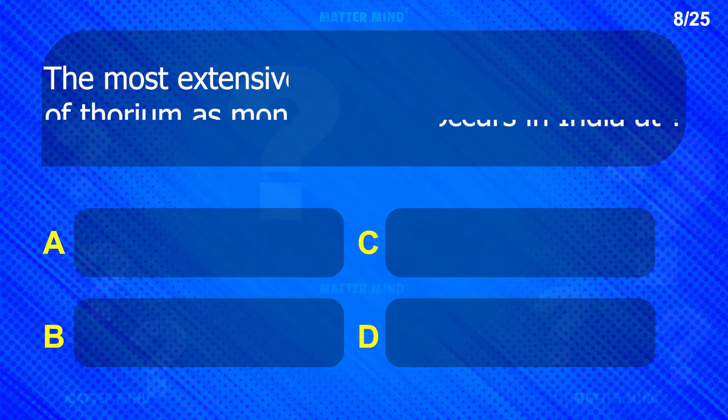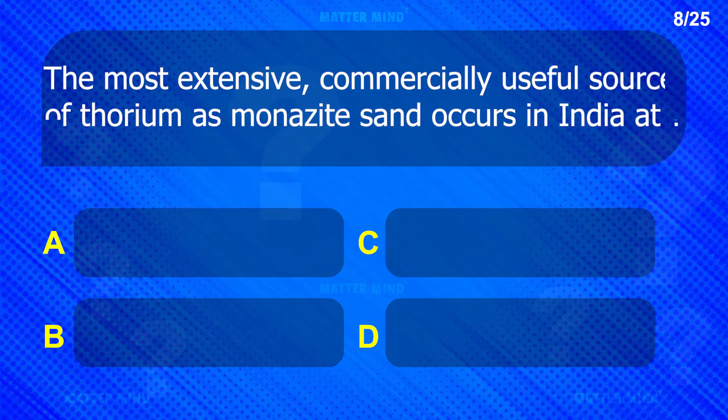The most extensive, commercially useful source of thorium, as monazite sand, occurs in India.